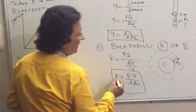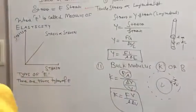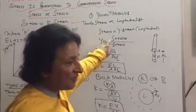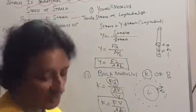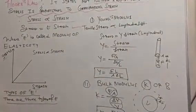The unit of K is the same as that of stress, because delta V upon V is dimensionless.